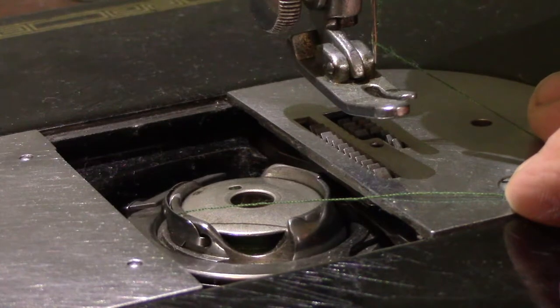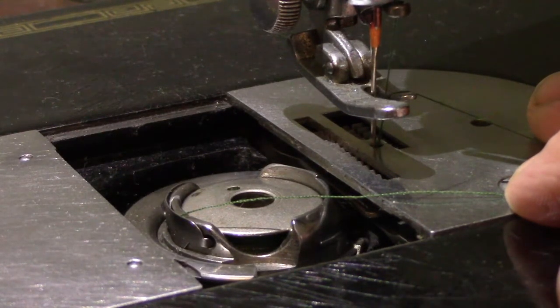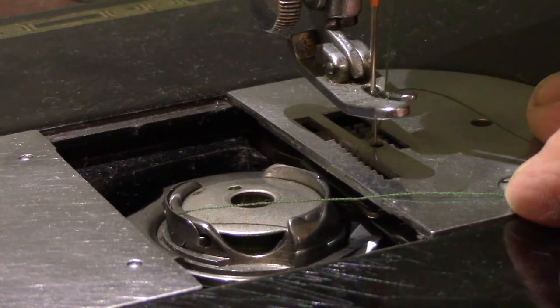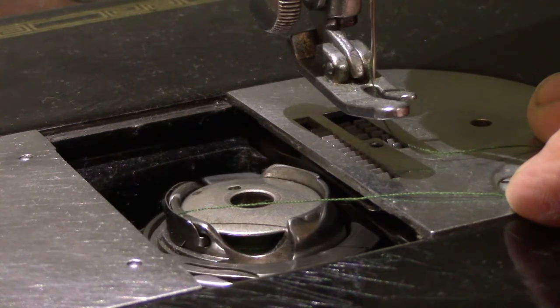The bobbin lies flat in here. To form the stitch, the needle brings the thread down. As the needle lowers, this exterior circle starts to rotate.